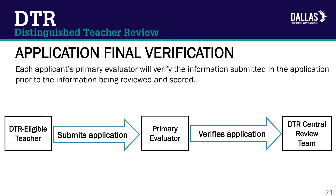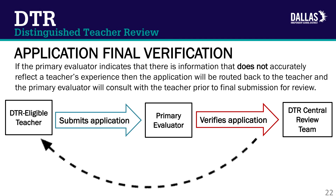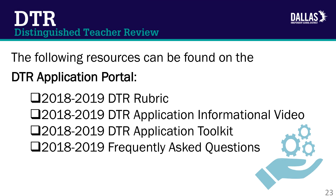After you submit your application, it will be verified by your primary evaluator and sent to the DTR Central Review Team to be reviewed and scored. If the primary evaluator indicates that there is information that does not accurately reflect the teacher's experience, then the application will be routed back to the teacher and the primary evaluator will consult with the teacher prior to final submission for review. After the primary evaluator completes final verification of the application, no additional changes may be made.